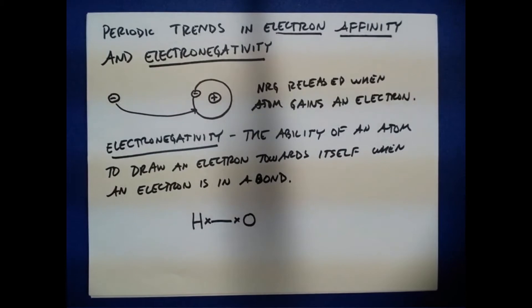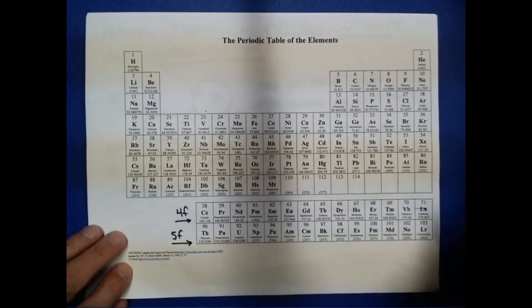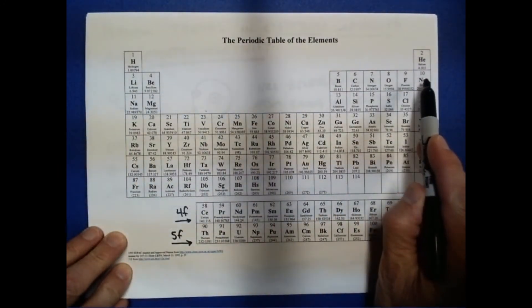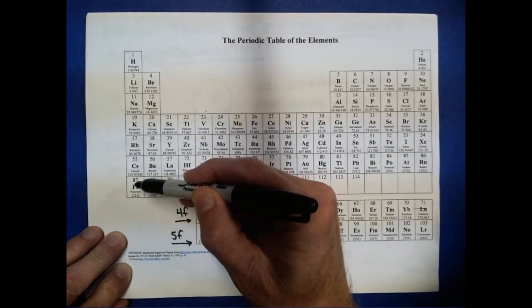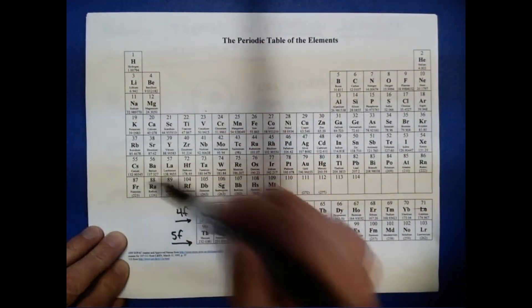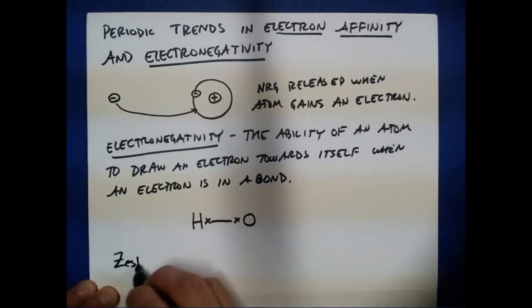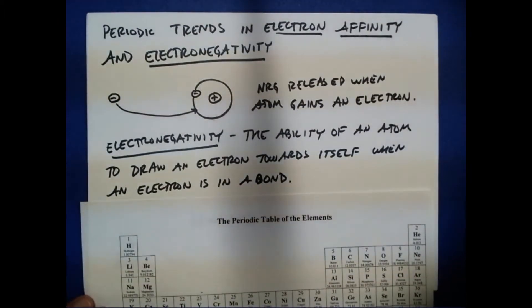Now that we know about electron affinity and electronegativity, let's discuss what we'd expect for these two properties as we move across a period or down a group. If we think about effective nuclear charge, we know that as we move across a particular period, the effective nuclear charge is going to increase.